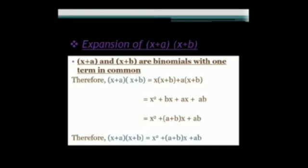Now we look at the expansion of (x + a)(x + b). x + a and x + b are binomials with one term in common. You can see that there are two members in the first bracket and two members in the second bracket. The first two members of the first bracket, that is x + a, have to be multiplied with the two members of the second bracket, that is x + b.